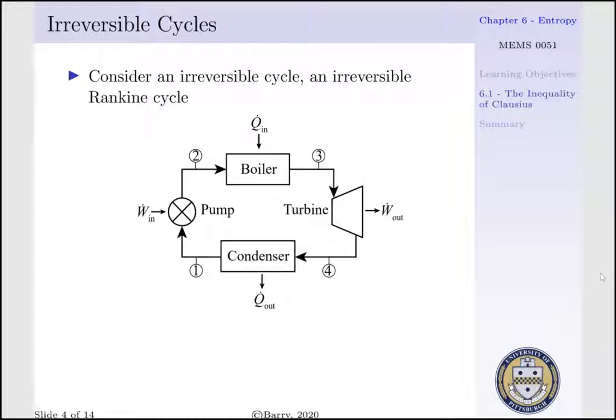We have fluid entering our pump at state 1, where it increases in pressure before entering our boiler at state 2. Through an isobaric heat addition process, we have fluid — hopefully steam — exiting at state 3 and entering our turbine, which produces work. The fluid is then rejected to a condenser, where it undergoes another isobaric process to decrease the quality of our fluid before entering the pump.